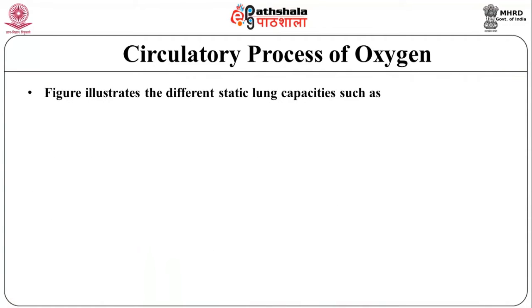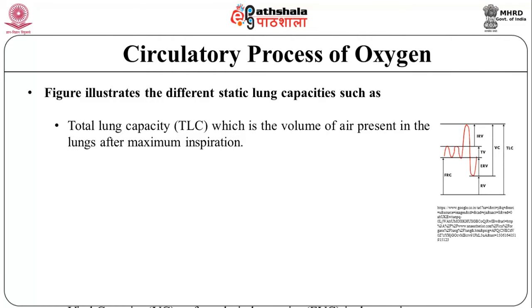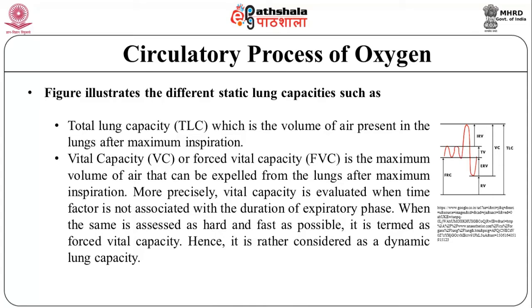The different static lung capacities include total lung capacity or TLC, which is the volume of air present in the lungs after maximum inspiration — essentially the entire capacity when you inhale to the maximum. Second is vital capacity or forced vital capacity, which is the maximum volume of air that can be exhaled from the lungs after maximum inspiration. Vital capacity is evaluated when the time factor is not associated with the expiratory phase, while when assessed by breathing out as hard and as fast as possible, it is called forced vital capacity or FVC — a dynamic lung function measured while the lungs are at work.